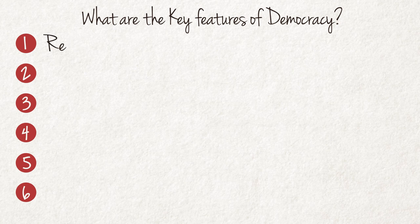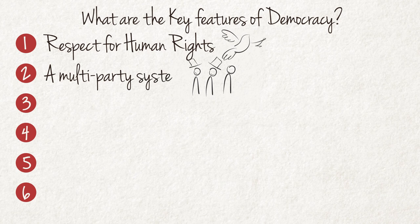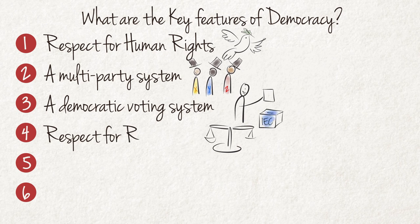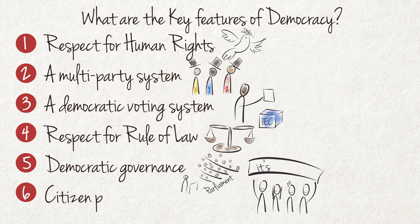They are: 1. Respect for basic human rights. 2. A multi-party political system paired with political tolerance. 3. A democratic voting system. 4. Respect for the rule of law. 5. Democratic governance. 6. Citizen participation.